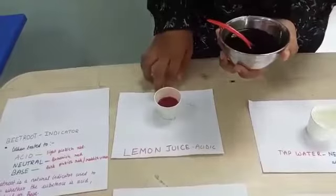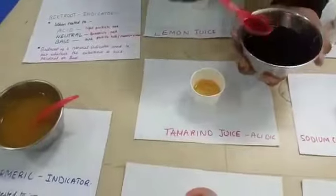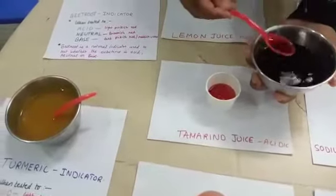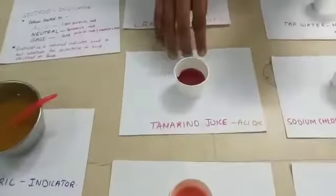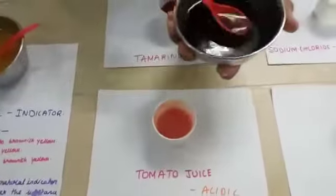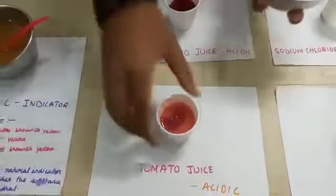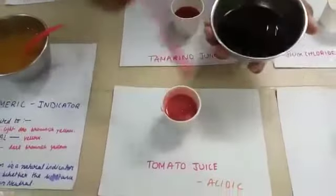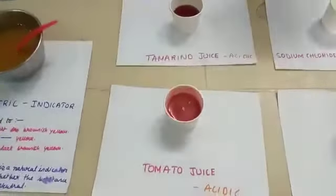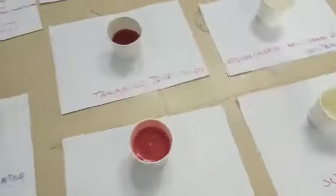This is added to lemon — it appears in pinkish red color. This is tamarind juice, and it also appears in the same color. And this is tomato juice. We can see these 3 are almost the same color. So this is acidic in medium.